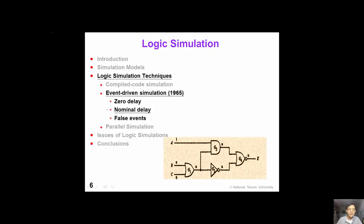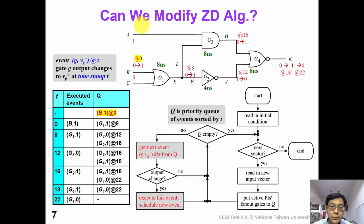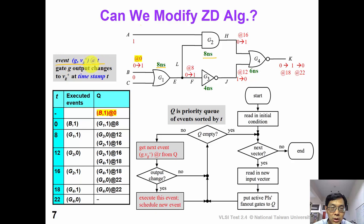Now let's consider non-zero gate delay in our simulation. Let's see if we can modify the zero-delay algorithm to perform simulation with delay. Suppose the gate delays are denoted inside each gate. Now each event is denoted as G comma VG plus at time t, which means gate output of G is changed to VG plus at timestamp t.